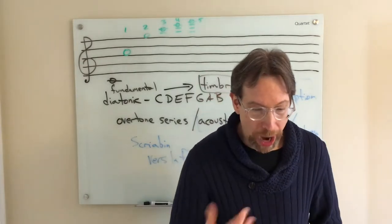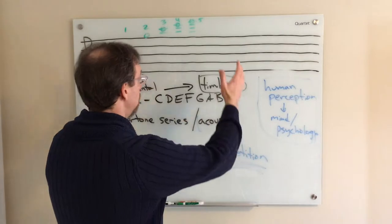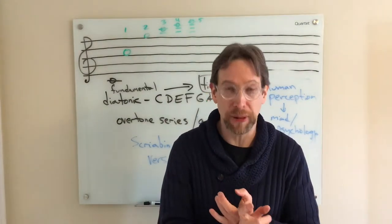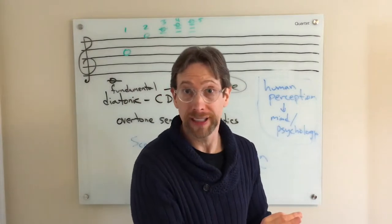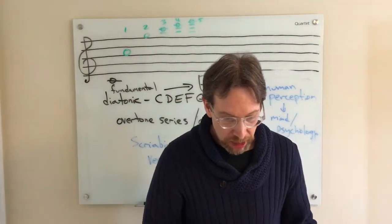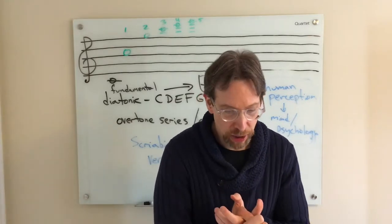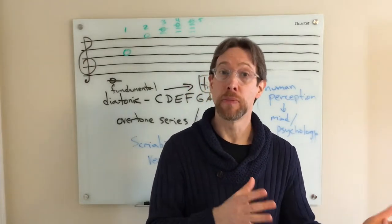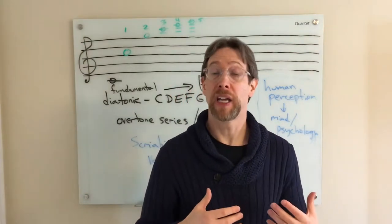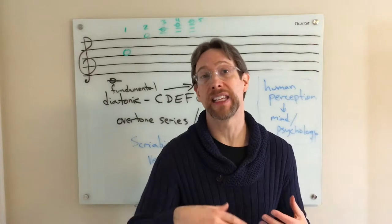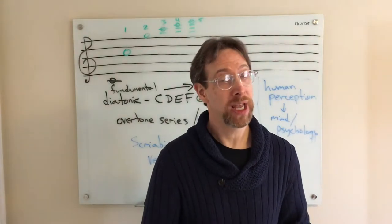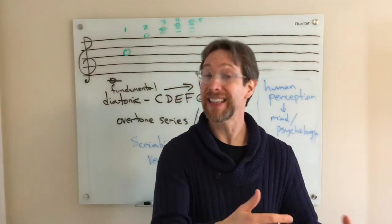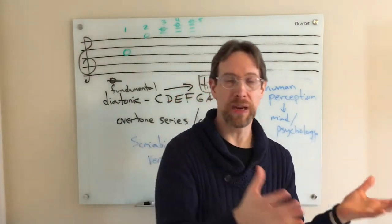Going back to Michael's question: why does diatonicism work? The answer is because it makes sense with the overtone series, human perception, and psychology. Why can you instantly hear when a note is played out of key? Overtones and human perception are part of it, and cultural experience is another component. Regarding the final part of his question — this must be related to our language — it's very common to say a first four-measure phrase ending in a half cadence is like a question, and the second phrase ending in a perfect authentic cadence is the answer. That's an analogy that works well between language and music.